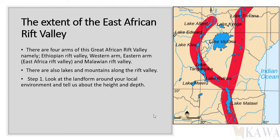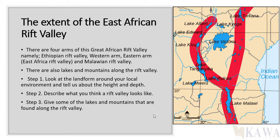Here is an exercise. Step one: look at the landforms around your local environment — are there rivers, a valley, a plateau, or a flat plain? Step out of your house and note the features you see around your home area. Step two: describe what you think the rift valley looks like in your own words from what I have described. Step three: give some of the lakes and mountains found along the rift valley by looking through the atlas.